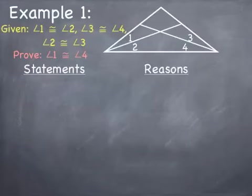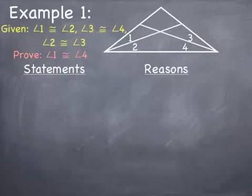The first example says we are given that angle 1 is congruent to angle 2, angle 3 is congruent to angle 4, and angle 2 is congruent to angle 3. We are asked to prove that angle 1 is congruent to angle 4. Notice the triangle to the right showing angles 1, 2, 3, and 4. Remember when writing a proof, we always start with what we are given — notice what we're given is in yellow.